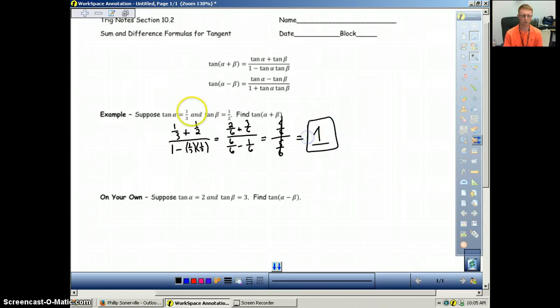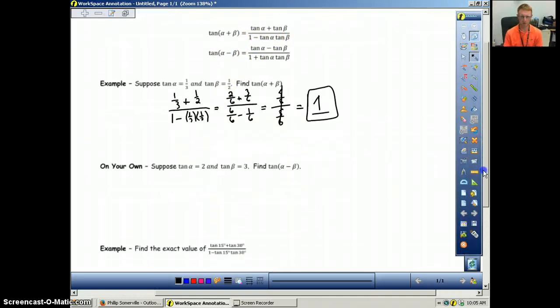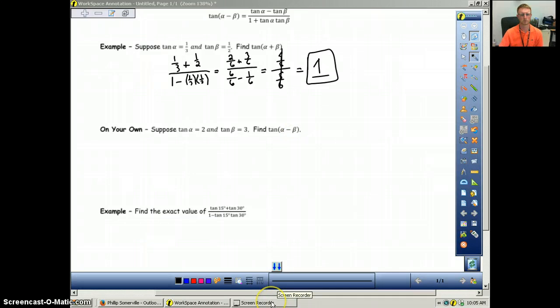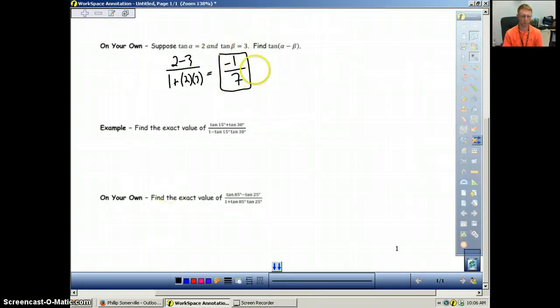So basically on these ones they're giving us what tangent of alpha and tangent of beta equals. So all we really need to do is plug in to our appropriate formula. So why don't you try this one on your own. Same idea. Just notice that this is the tangent of alpha minus beta this time. You should have gotten negative one over seven. Again all you're doing is plugging in the two for the tangent of alpha, the three in for the tangent of beta, and then the same thing on the bottom and you end up with negative one-seventh.